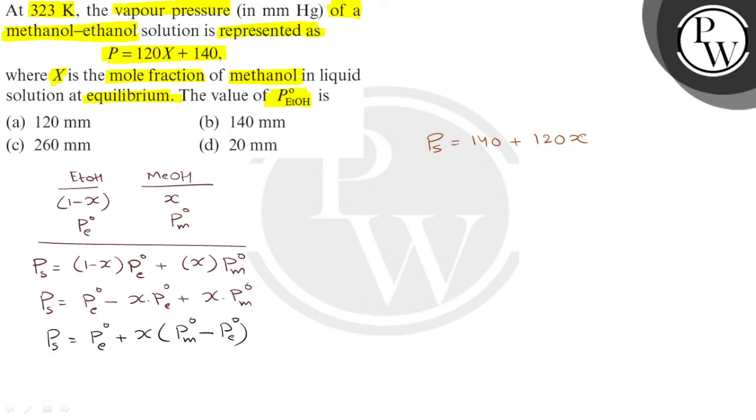If we equate both equations then P0-e is 140, and P0-m minus P0-e is 120, so P0-m is 120 plus P0-e. That is 120 plus 140 or 260.